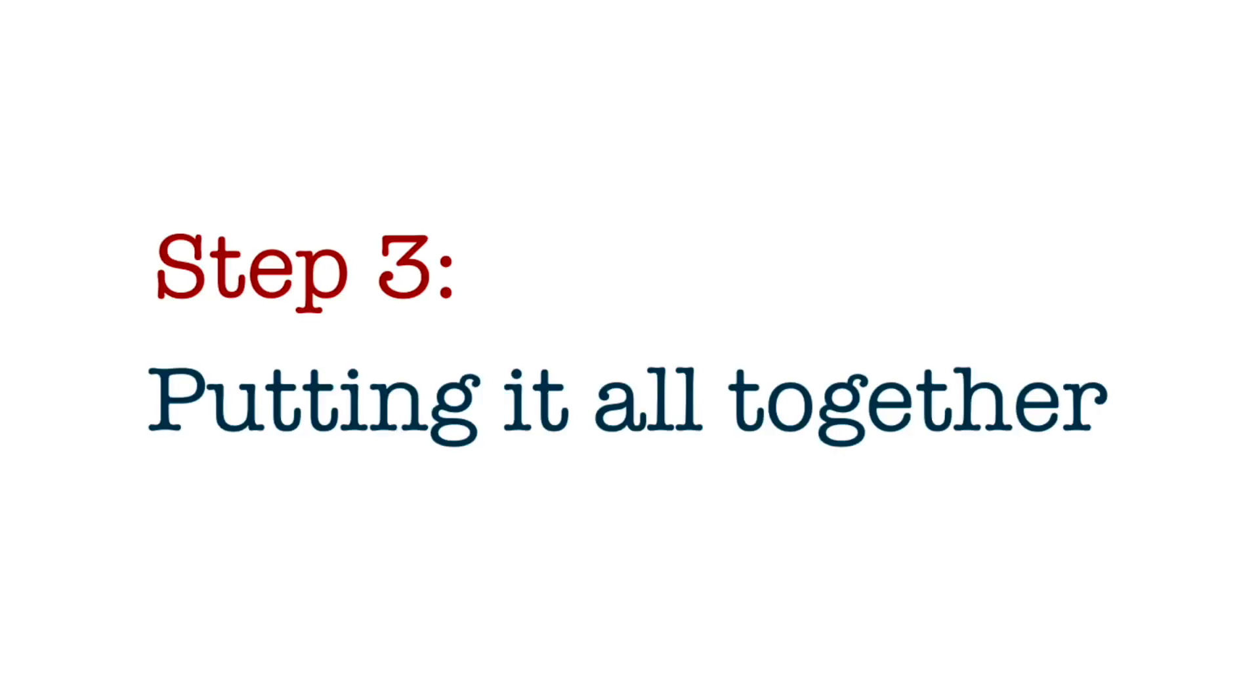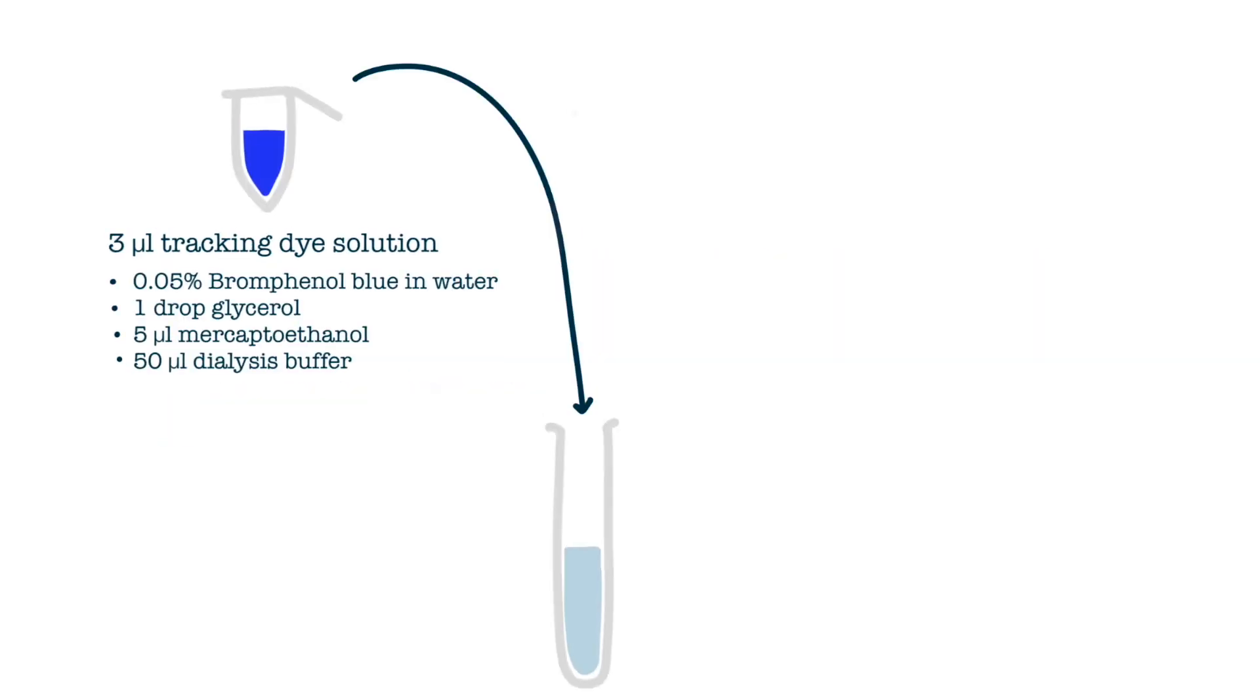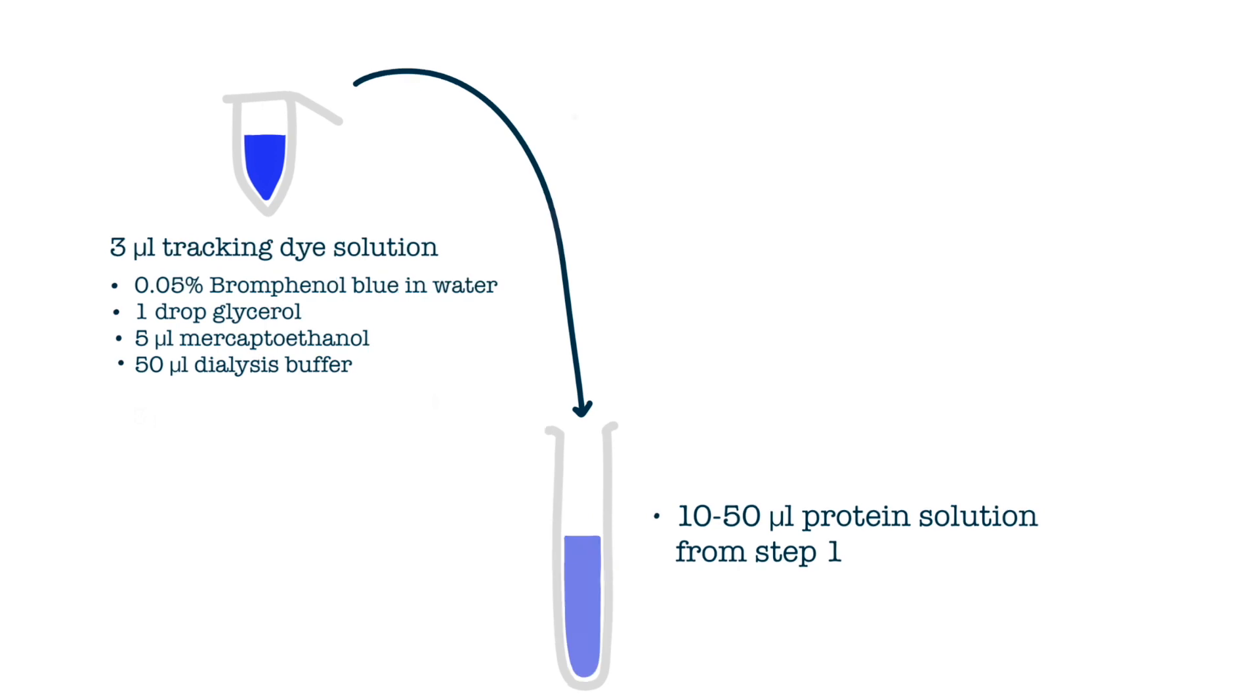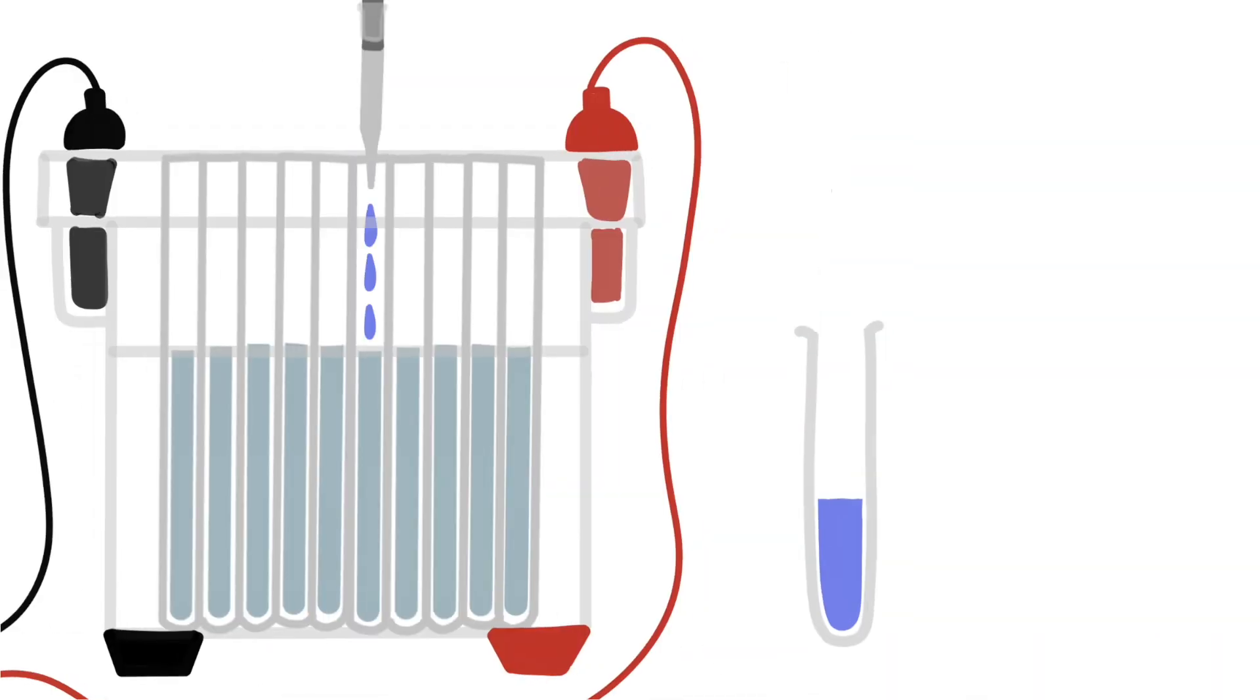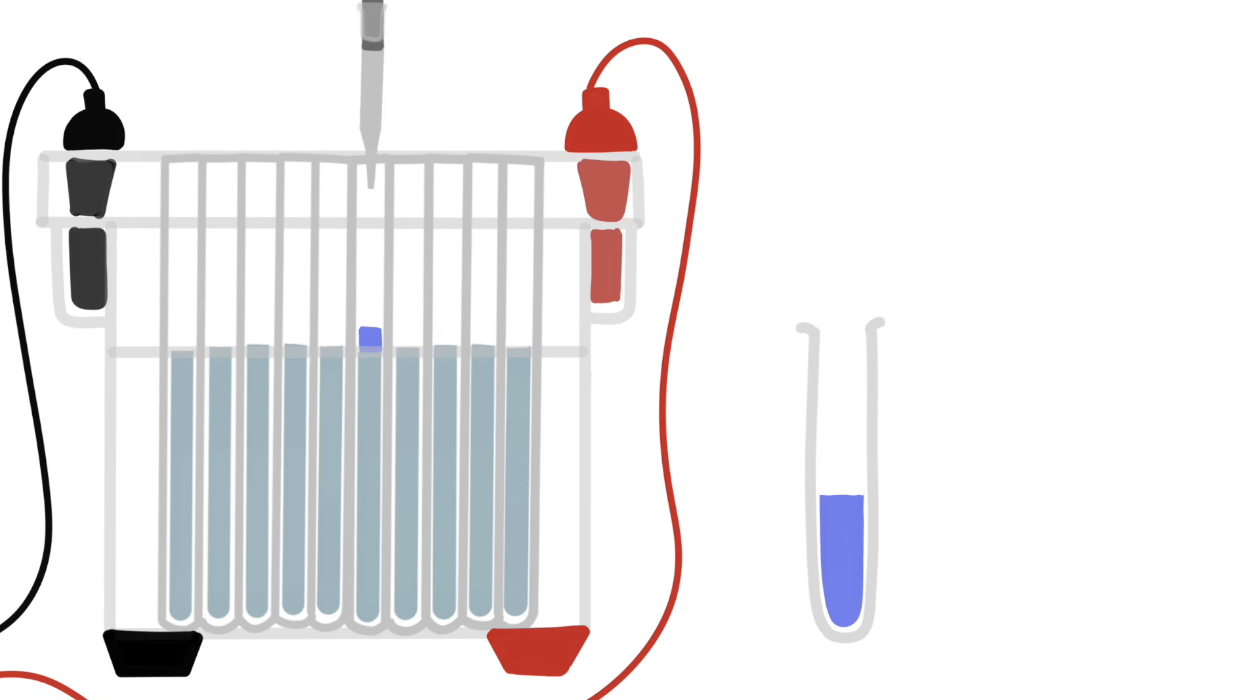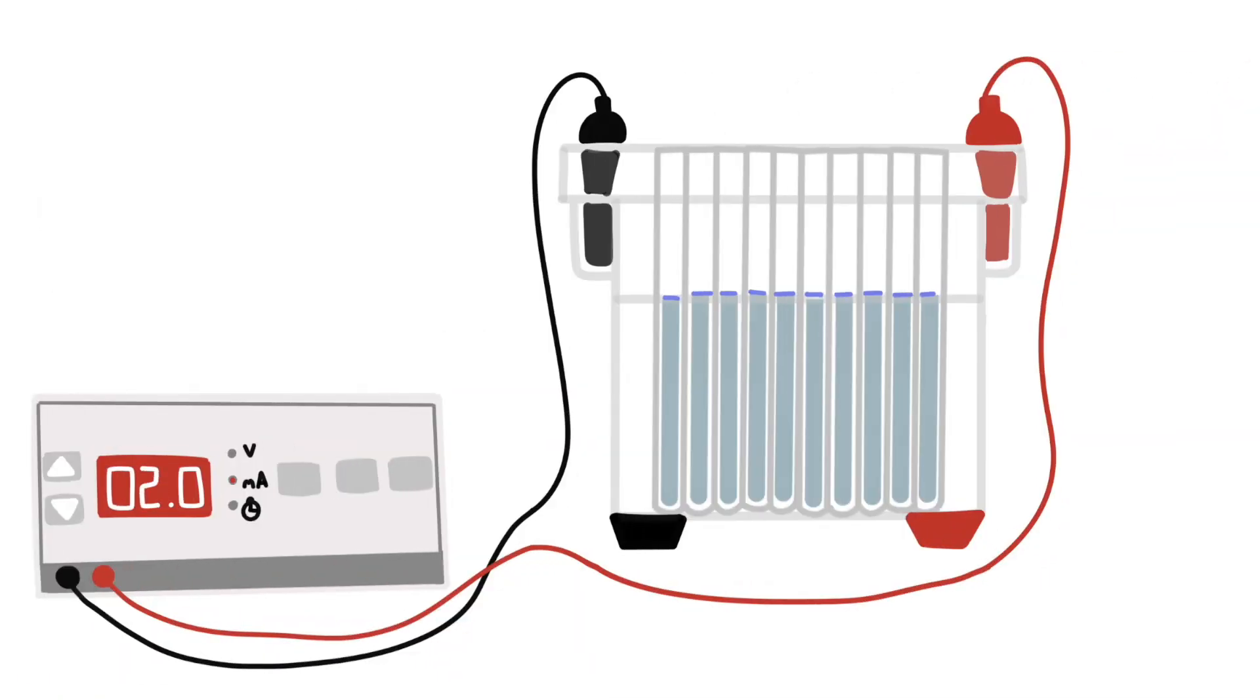Step 3: Putting it all together. To track protein location, tracking dye solution consisting of these chemicals were added to the protein solution prepared in step 1. The solution was then applied to the acrylamide gels made in the previous step. And finally, electrophoresis was conducted at a constant current.